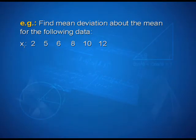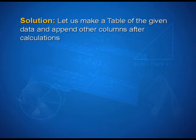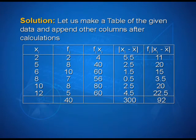Let us see an example. Find the mean deviation about the mean for the following data: x = 2, 5, 6, 8, 10, 12 with frequencies f = 2, 8, 10, 7, 8, 5. We make a table and calculate fi·xi: 2×2=4, 5×8=40, 6×10=60, 8×7=56, 10×8=80, 12×5=60. The total N = Σfi = 40 and Σfi·xi = 300.